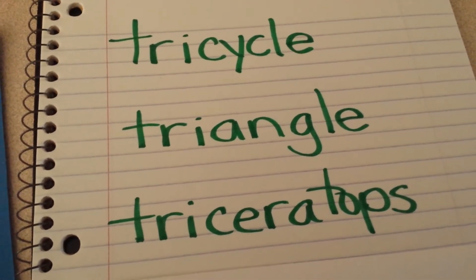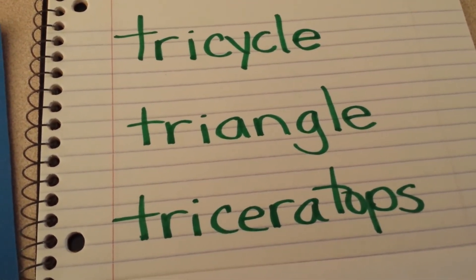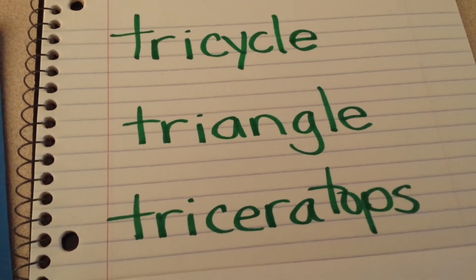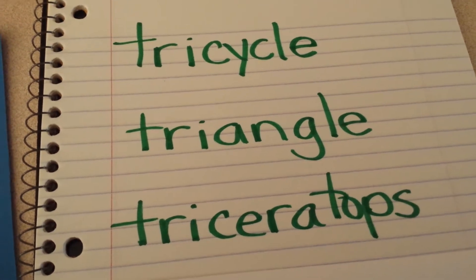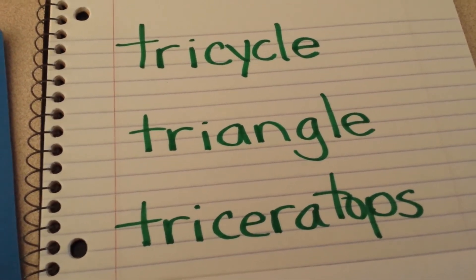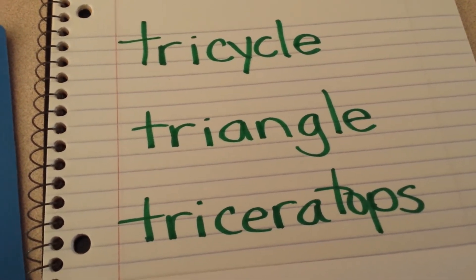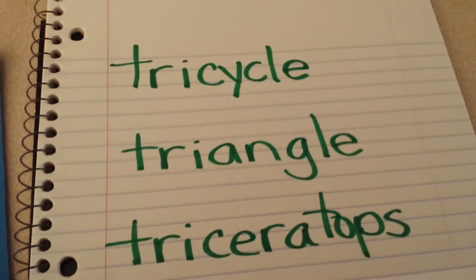And triceratops, that's a dinosaur, and that dinosaur has three horns. Tricycle, triangle, triceratops. Those first three letters, tri, mean the number three.